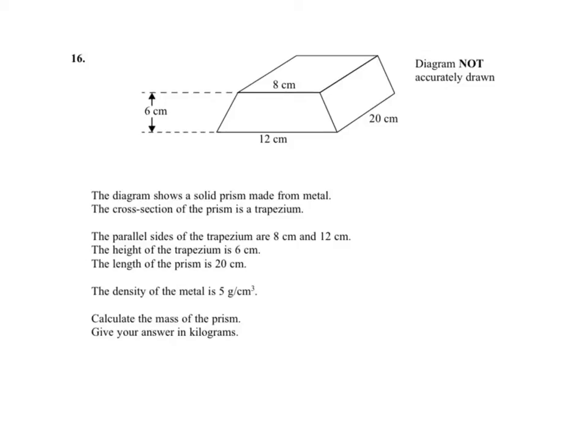Question 16. We need to work out the mass of the prism, knowing that the density is 5g by 1cm³.